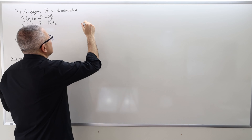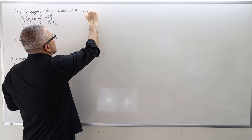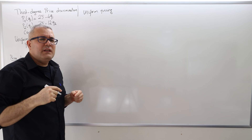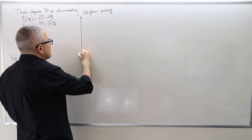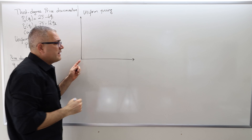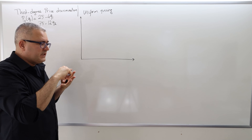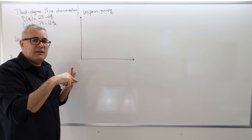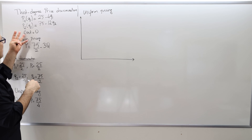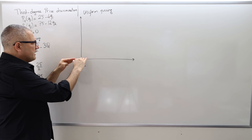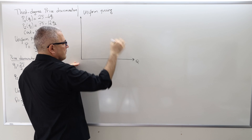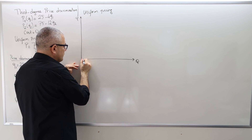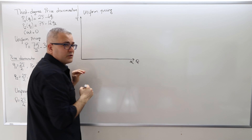So let's first do the uniform pricing. In order to calculate the surpluses and the deadweight loss, I need a price vs. quantity graph. In that graph, I need three functions: the inverse demand curve, the marginal revenue curve of the monopolist, and the marginal cost curve. Here, because the cost is zero, the marginal cost curve is actually the horizontal axis itself.